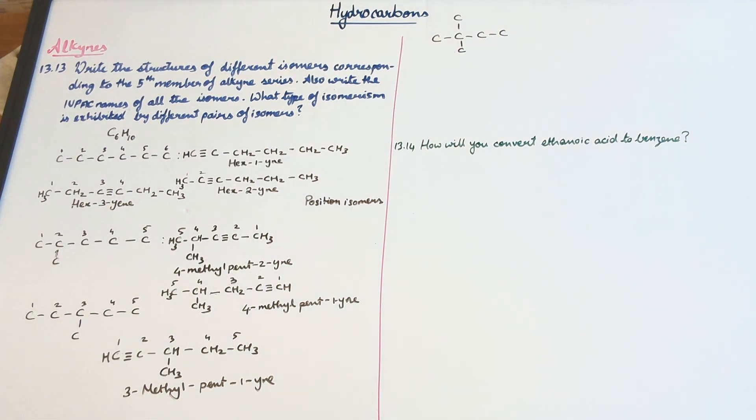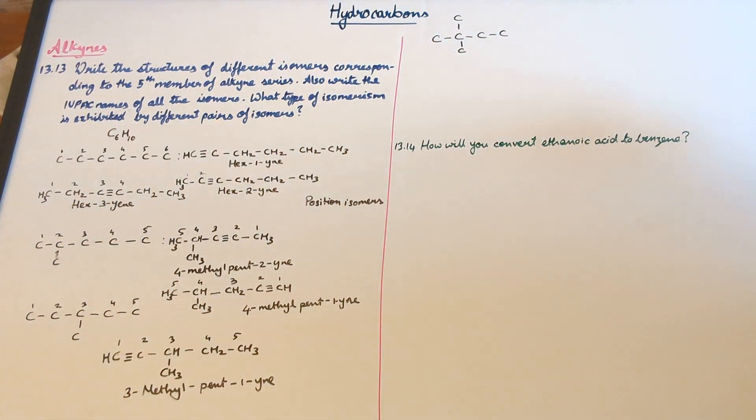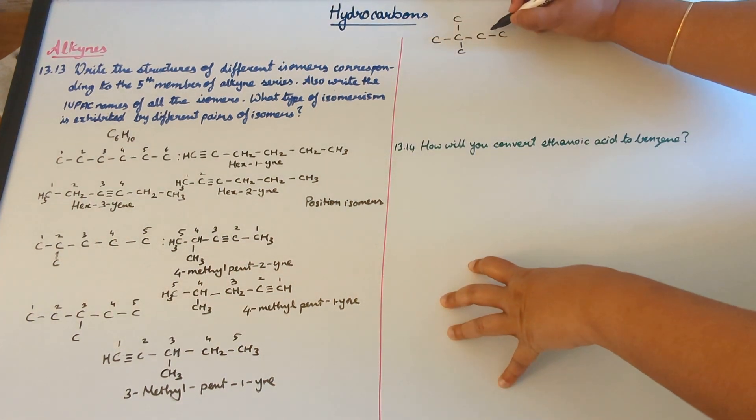So again you have a chain isomerism shown over here. Next is the one here. And since this carbon atom is incapable of performing a triple bond, it's only going to be between these two carbon atoms.